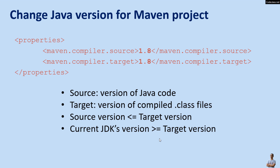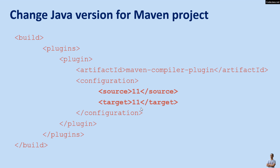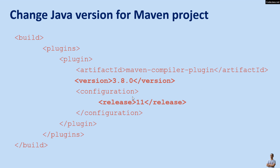The current JDK version must be equal to or greater than the target version. You can also change Java version for a Maven project by configuring the Maven compiler plugin. You can see source and target in the configuration element of the Maven compiler plugin.